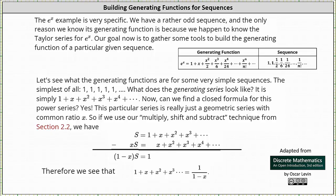Welcome to a lesson on building generating functions for sequences. In the last lesson, we learned the generating function for the sequence 1, 1, 1/2, 1/6, 1/24, and so on, is e to the power of x. The e to the x example is very specific, and the only reason we know its generating function is because we happen to know from calculus the Taylor series for e to the x. Our goal now is to gather some tools to build generating functions for a particular given sequence.